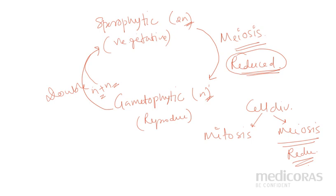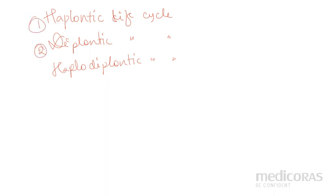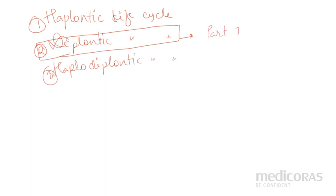Now, what are the types of Alternation of Generation? We have actually three different types. One is known as haplontic life cycle. The second is diplontic life cycle. And the third is haplodiplontic life cycle. Now we have to study all three life cycles. Diplontic life cycle I have already covered — it is in Part 1 of Reproduction in Flowering Plants. If anyone does not know, click on the eye button and see it. Please watch that video if you haven't seen it.